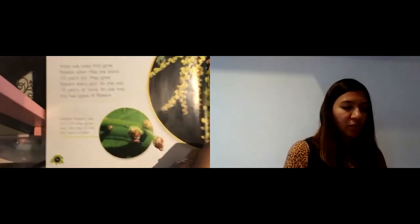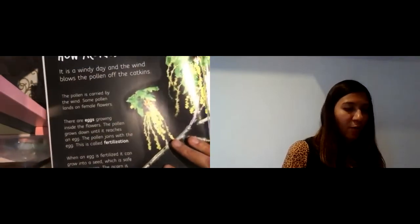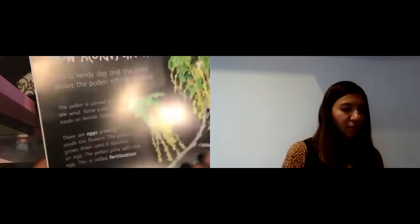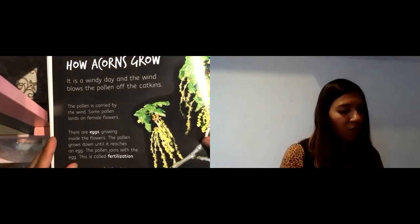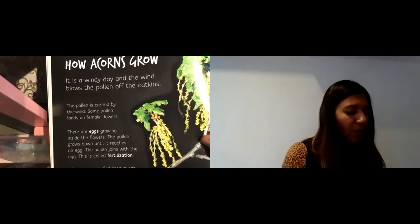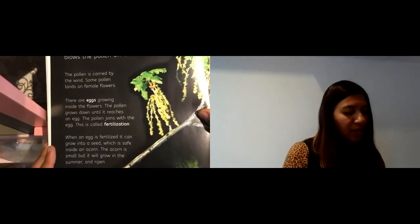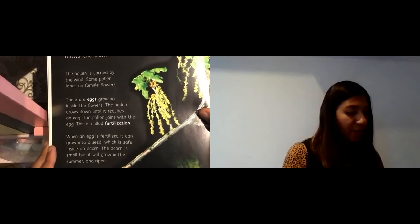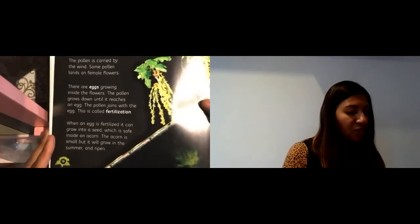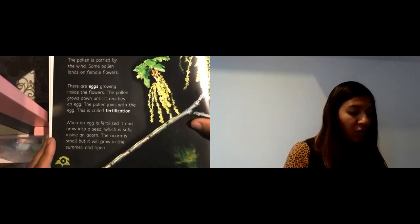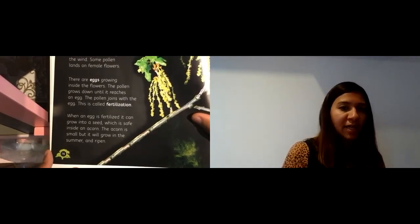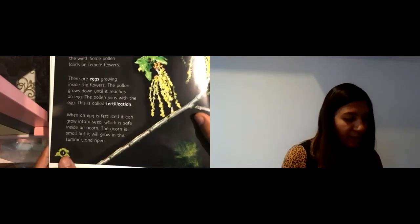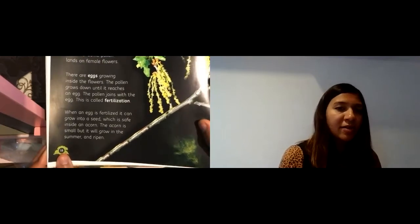Then we're going to move on to the next page which is titled 'How Acorns Grow.' It is a windy day and the wind blows the pollen off the catkins. The pollen is carried by the wind. Some pollen lands on female flowers. There are eggs growing inside the flowers. The pollen grows down until it reaches an egg. The pollen joins with the egg, and this is called fertilization.